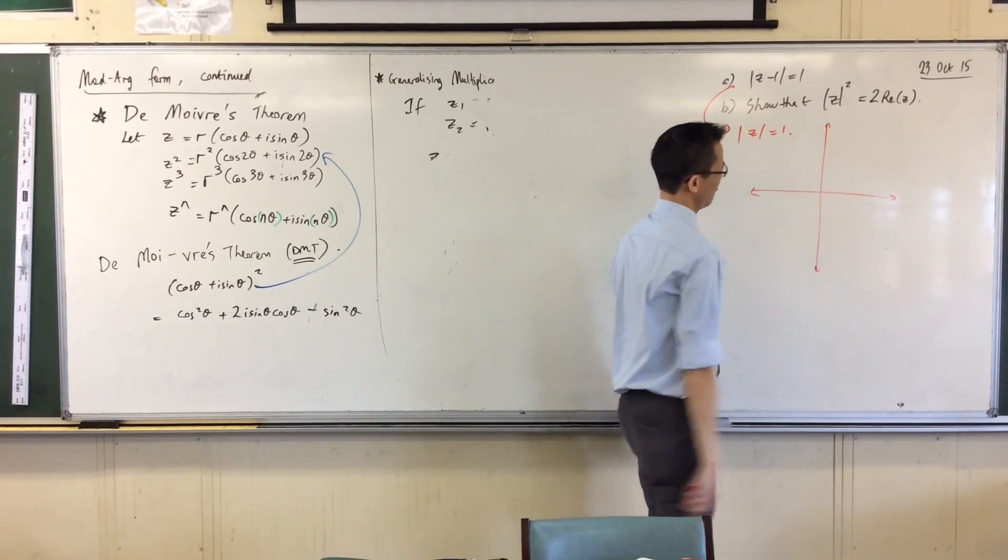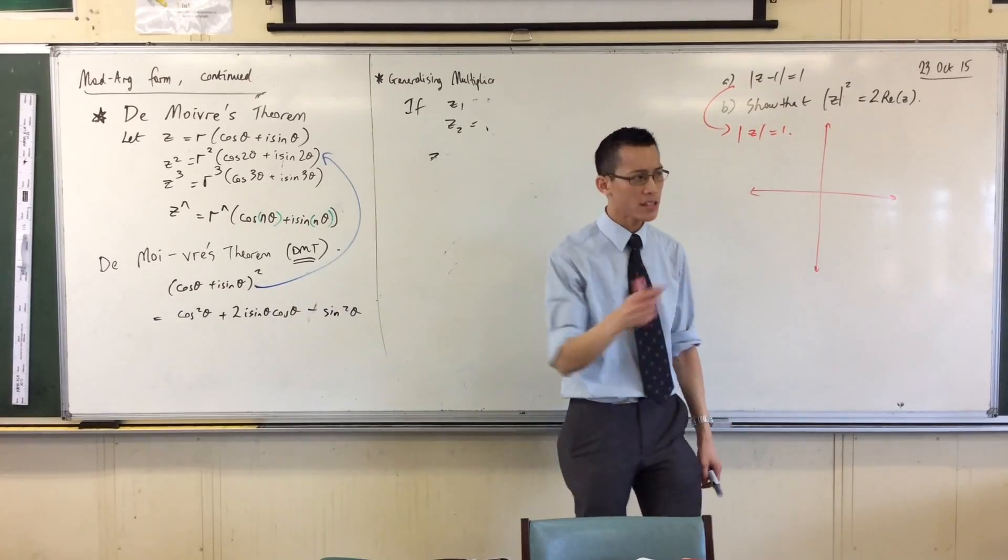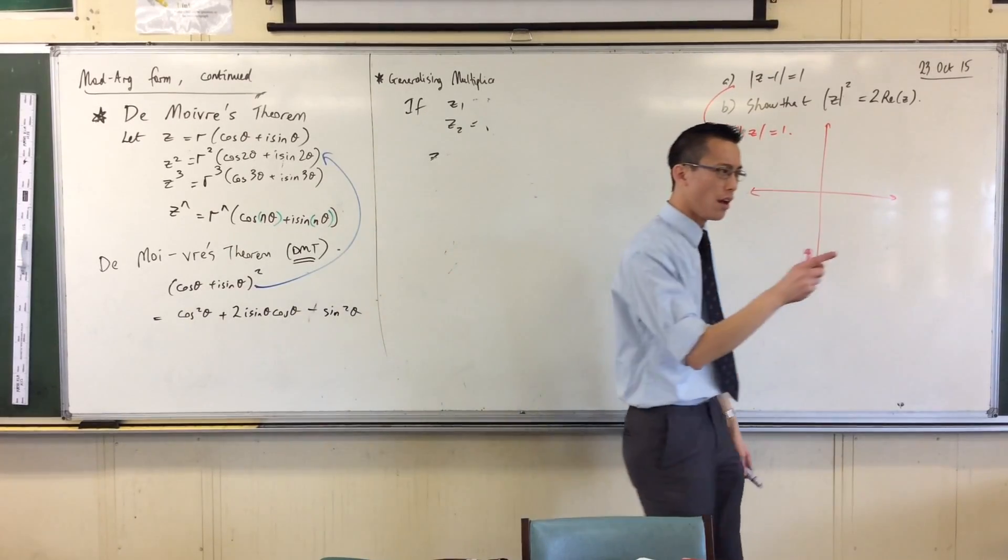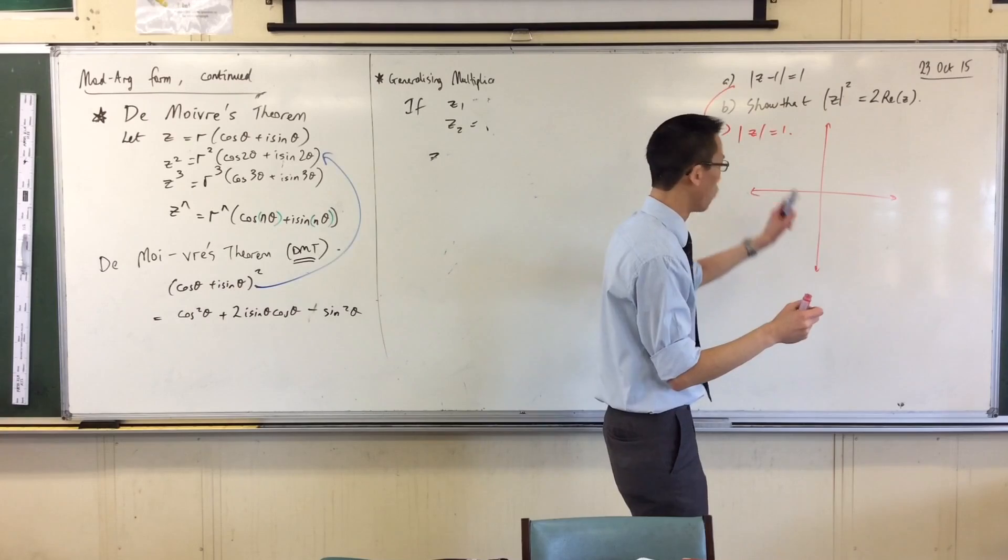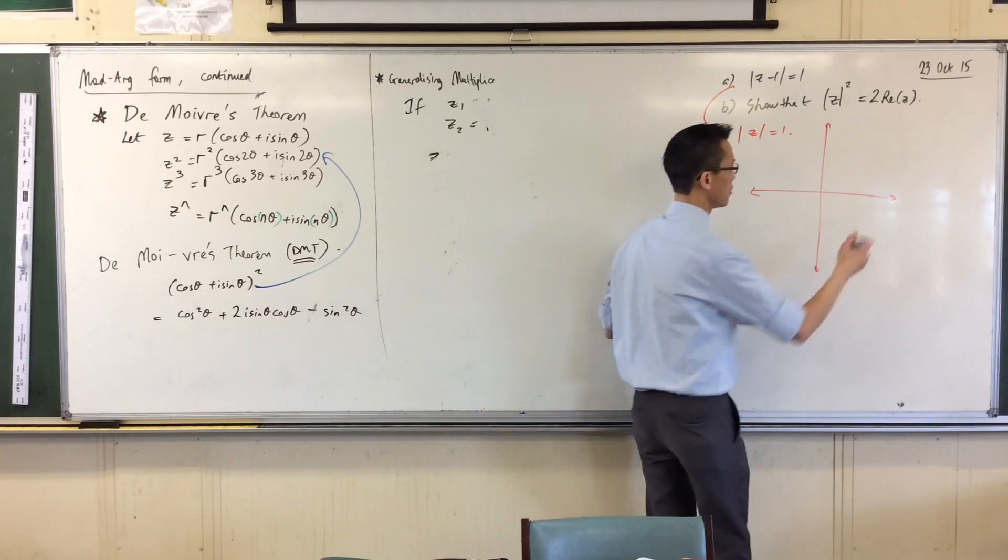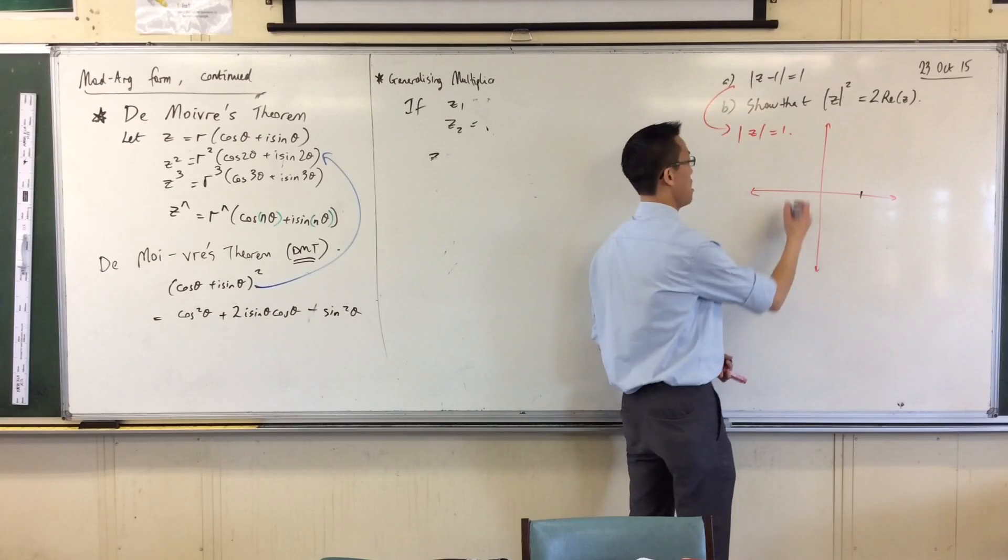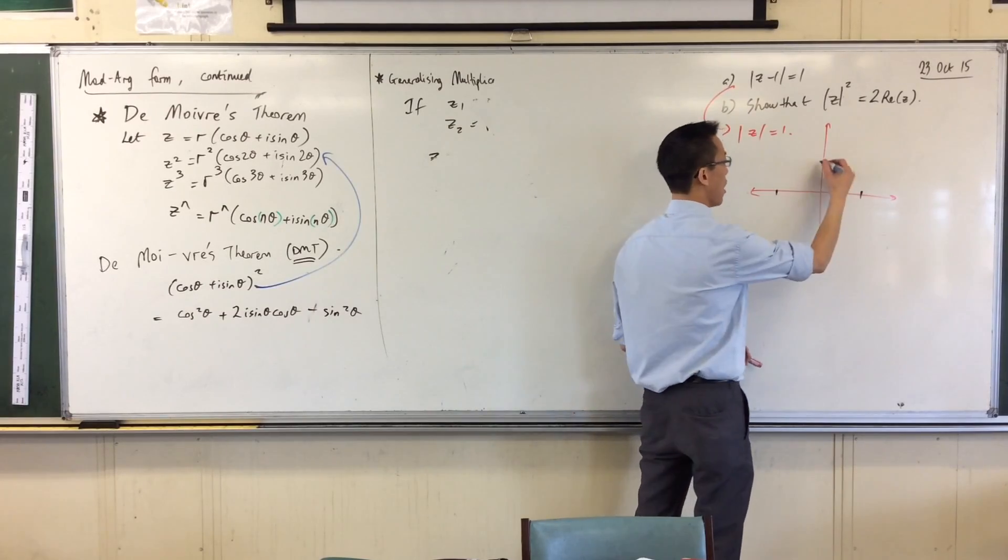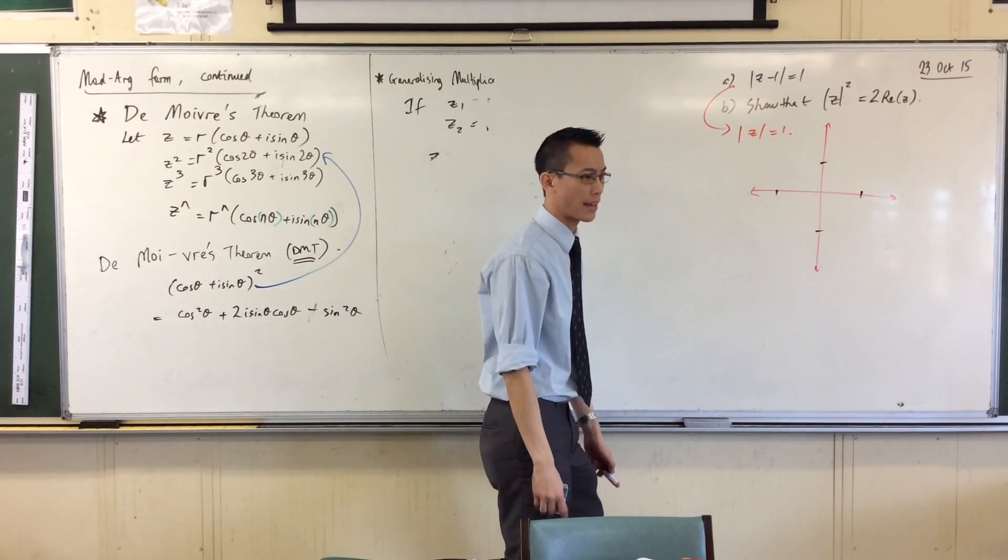There are a whole bunch of numbers that are one unit from the origin. For example, one is one unit from the origin, negative one is one unit from the origin, i and negative i, they're all one unit from the origin.